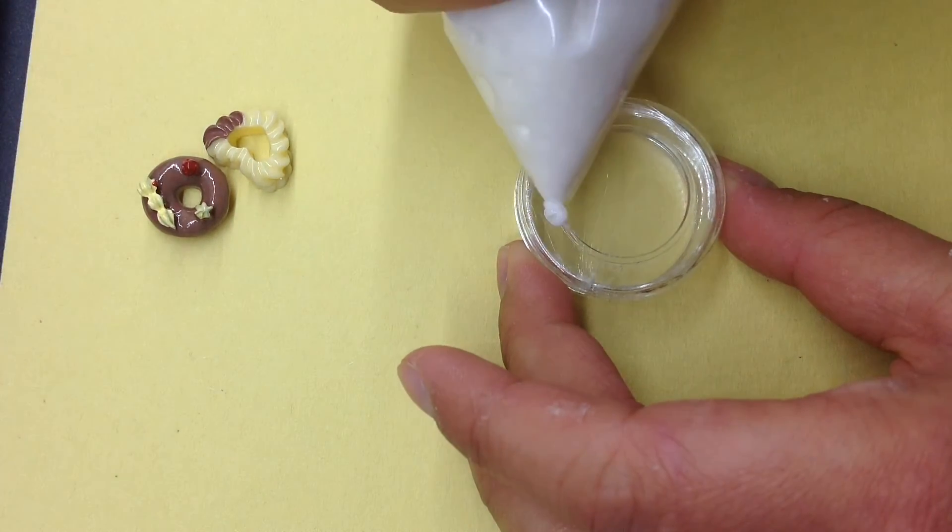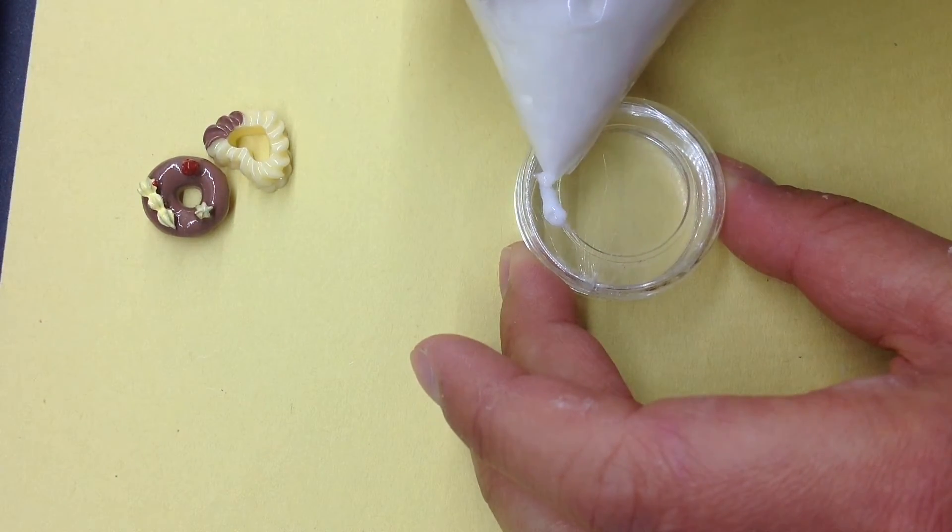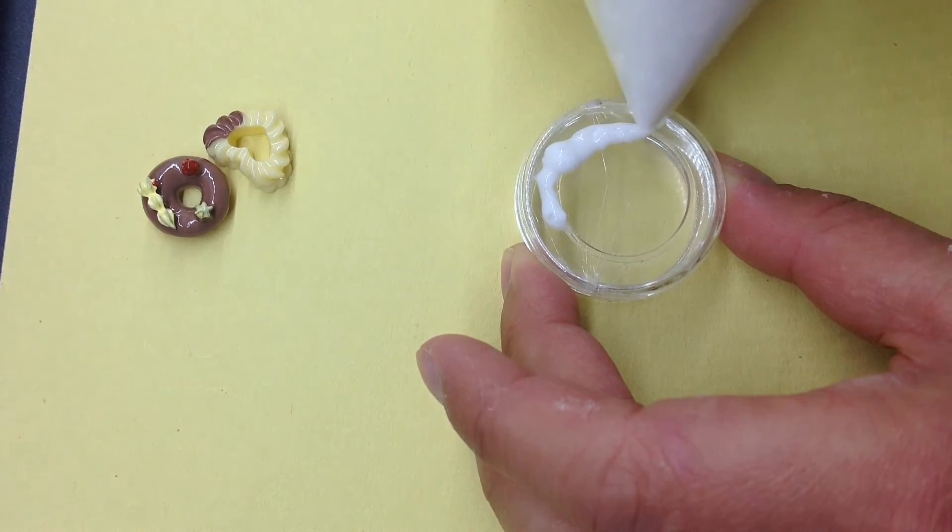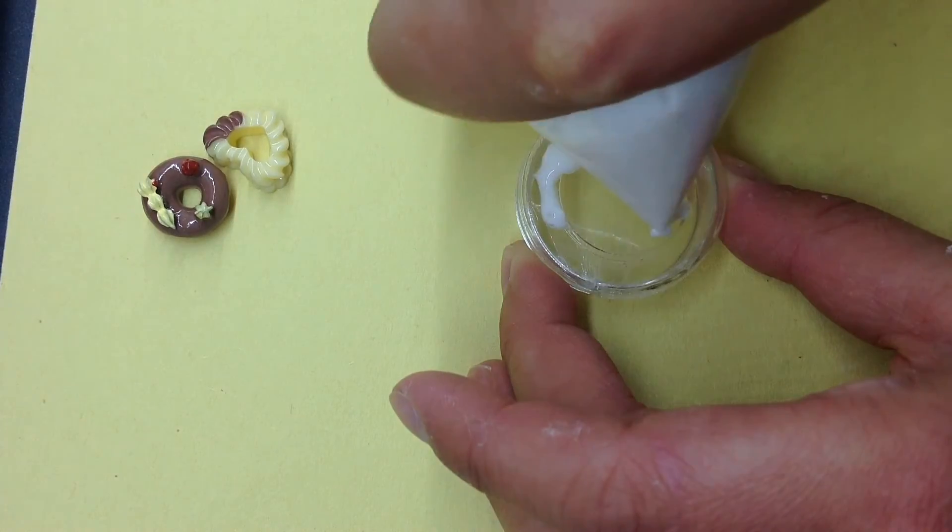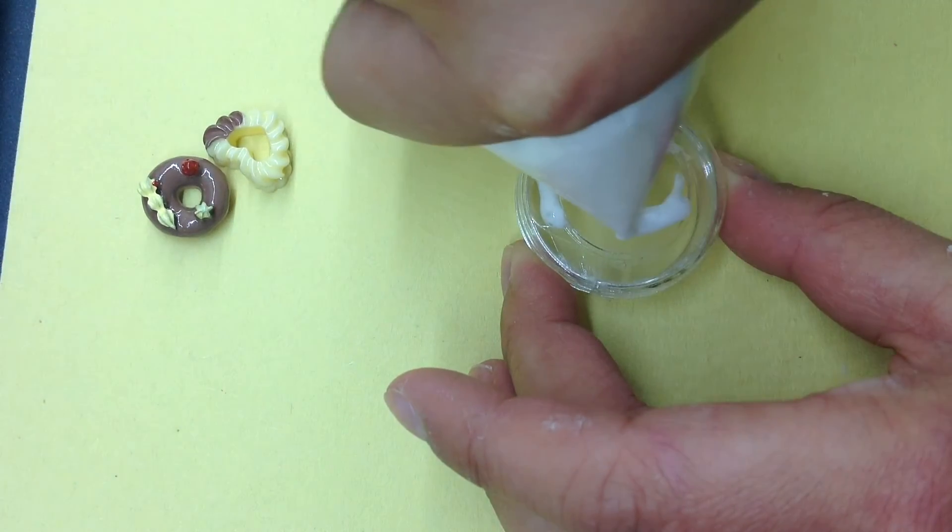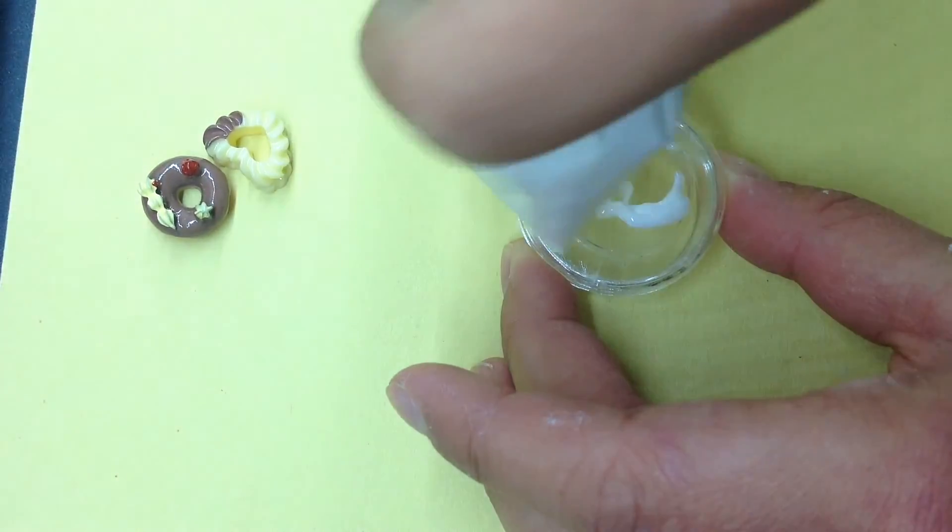Now I am starting to squeeze out the piping or the whipped cream onto the container, which has a crack in it. Because the hole was so small, there were clumps and it was getting stuck, so I had to cut it again.